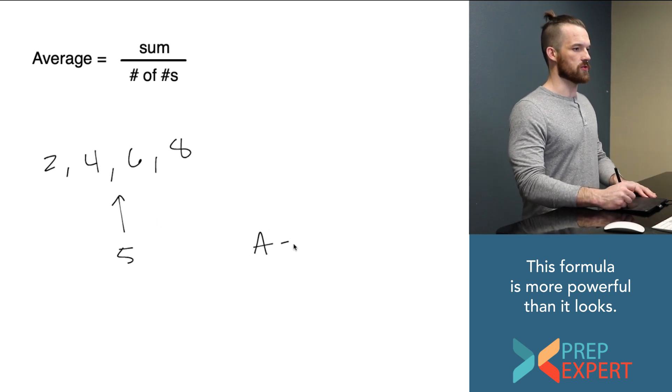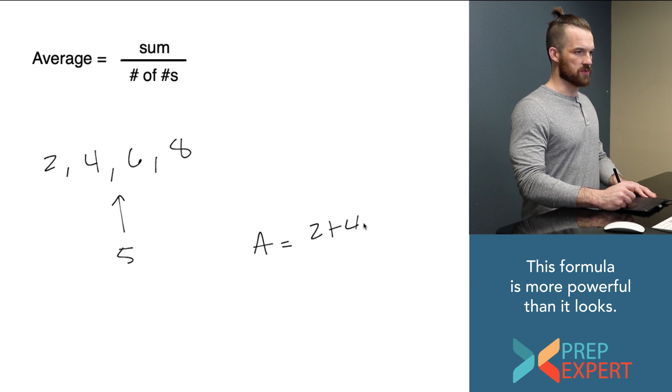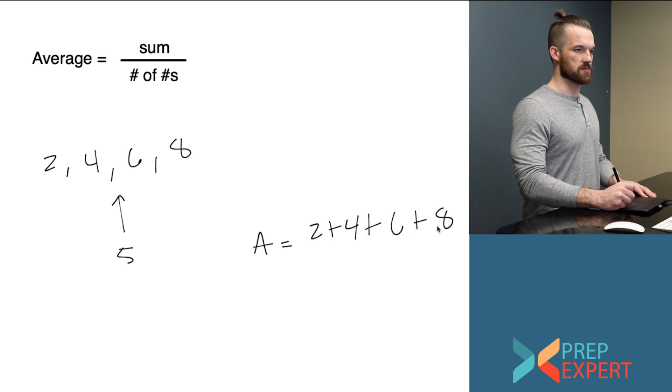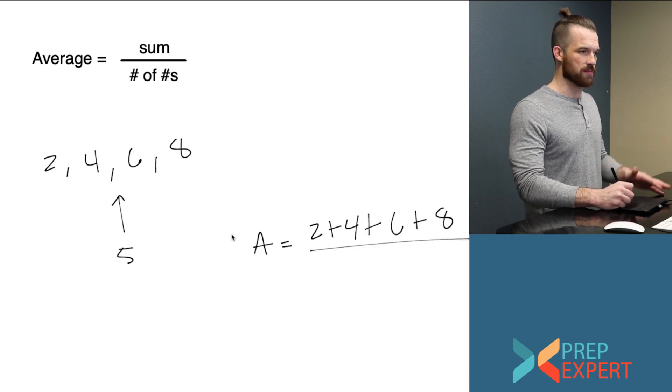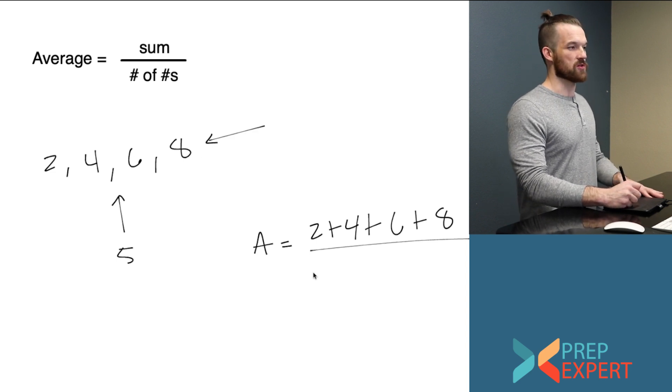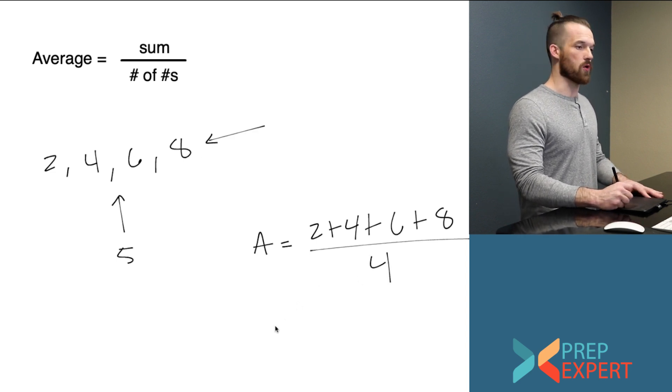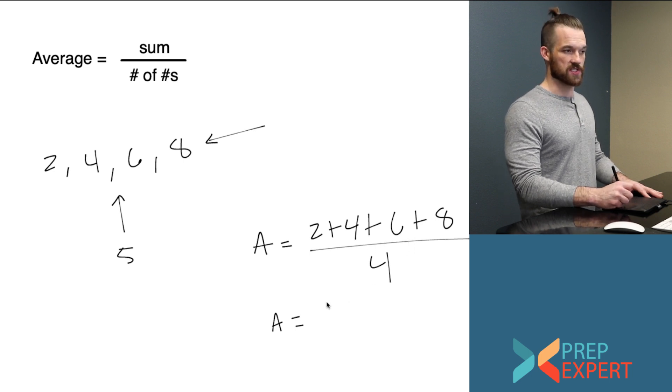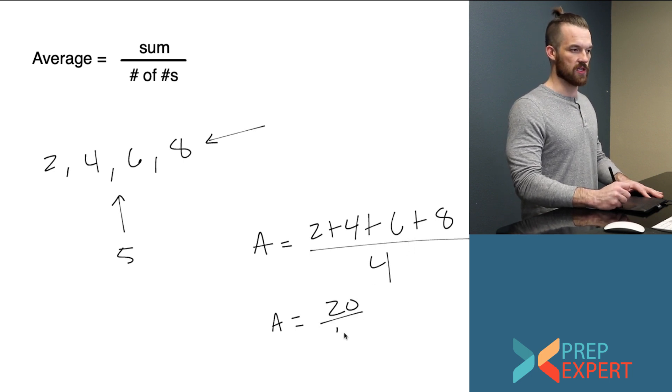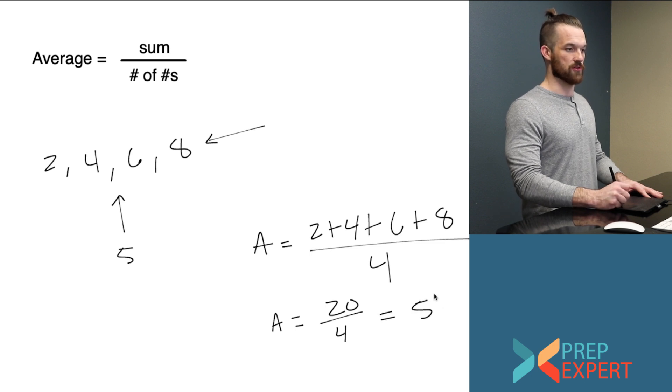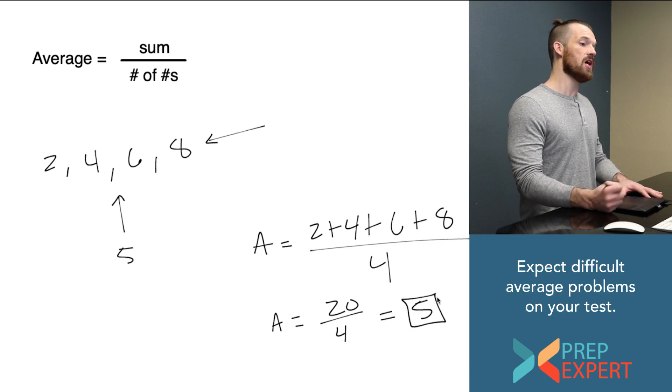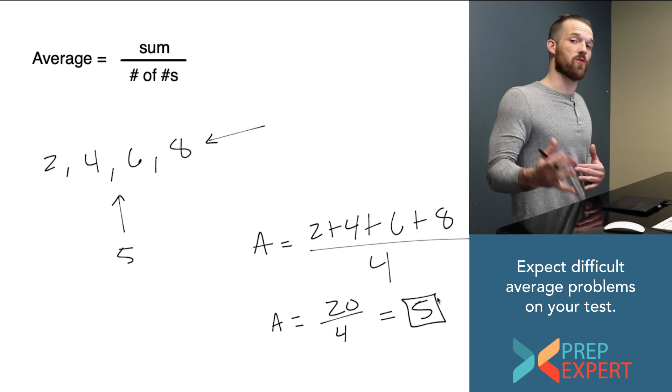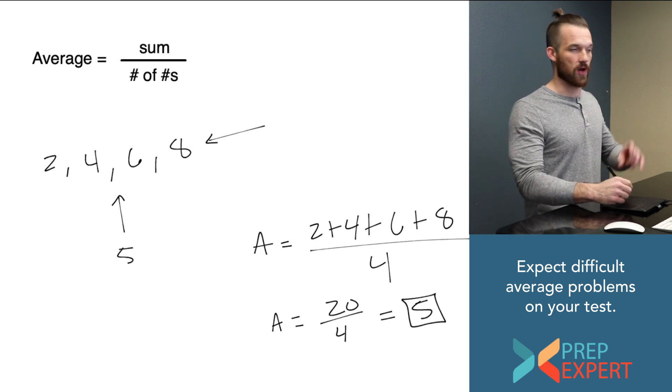Average equals sum over number of numbers. Right? So average equals sum 2 plus 4 plus 6 plus 8, the sum of all the values in my set, over the number of numbers. How many numbers are there in this set? There are 4 numbers. So my average then is 2 plus 4 is 6 plus 6 is 12 plus 8 is 20 over 4. My average then indeed is 5. So we got the same value but we used the formula instead of just kind of braining our way through it.